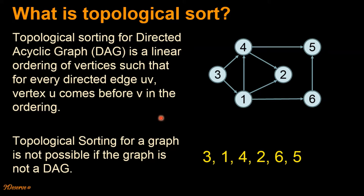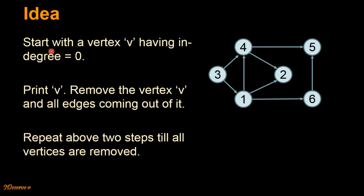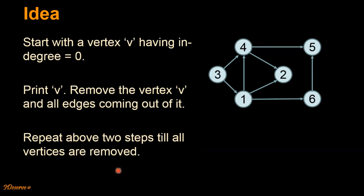Now let's look at the approach to find out the topological sorted order. The first step is we start with a vertex v having in-degree of 0. For this particular graph, vertex 3 has in-degree of 0, vertex 4 has in-degree of 2, vertex 1 has in-degree of 1, and so on. So we will start with vertex 3 because it has in-degree of 0. In the second step, we print the vertex v and remove the vertex v and all edges coming out of it. We repeat these two steps till all vertices are removed.